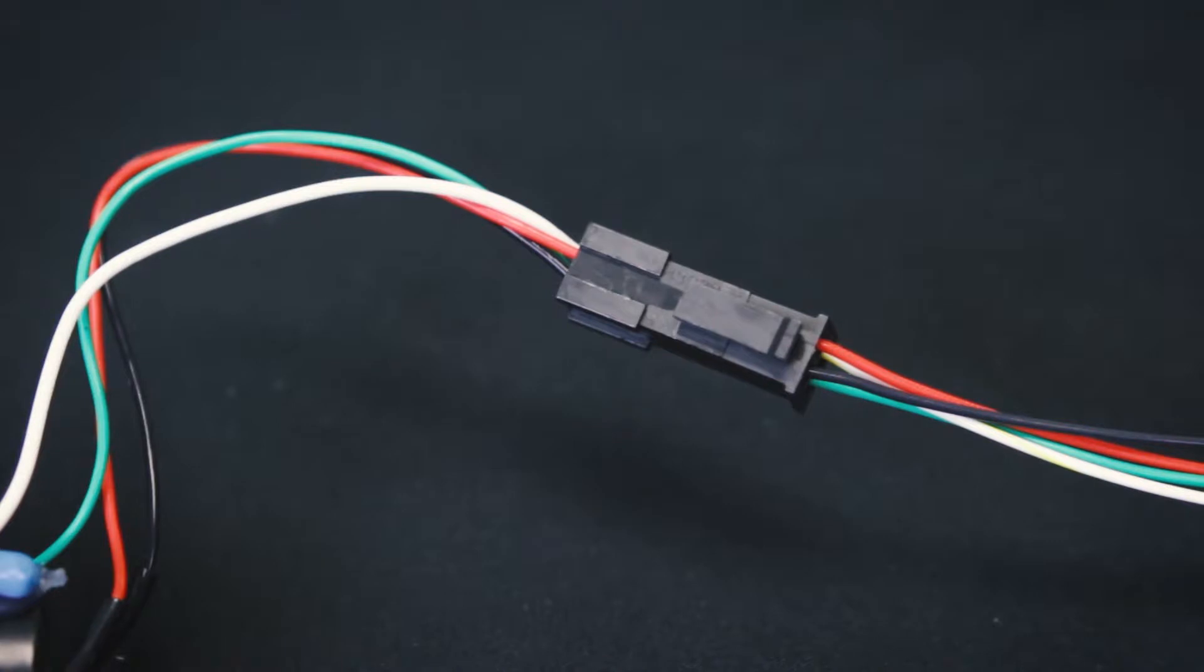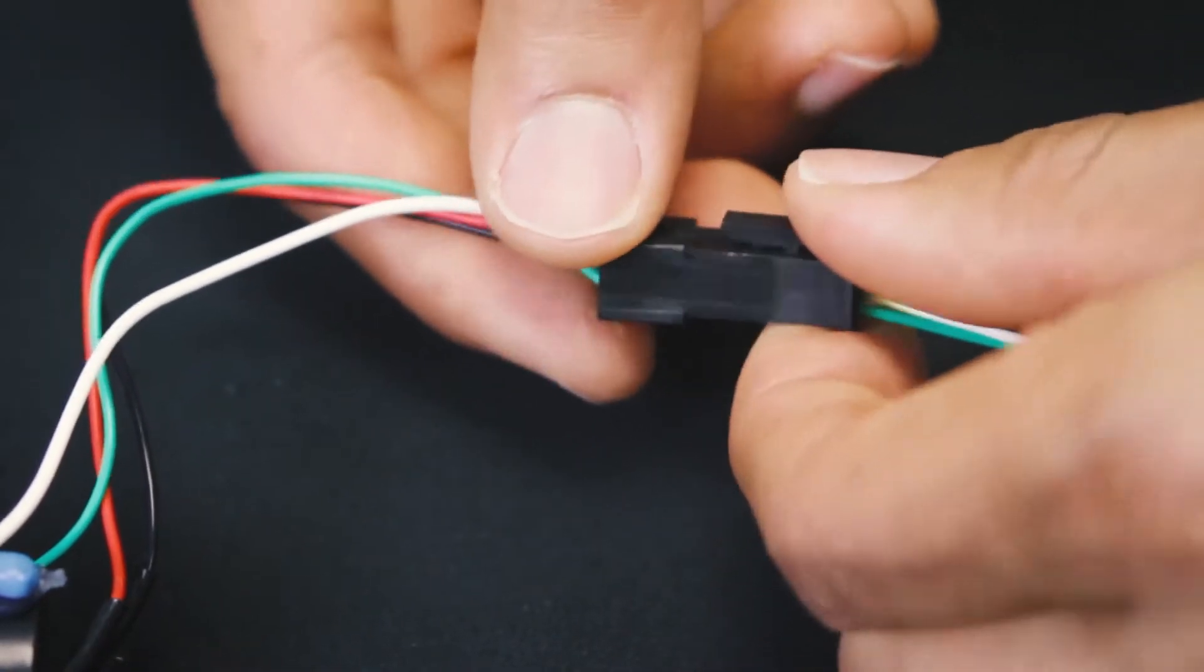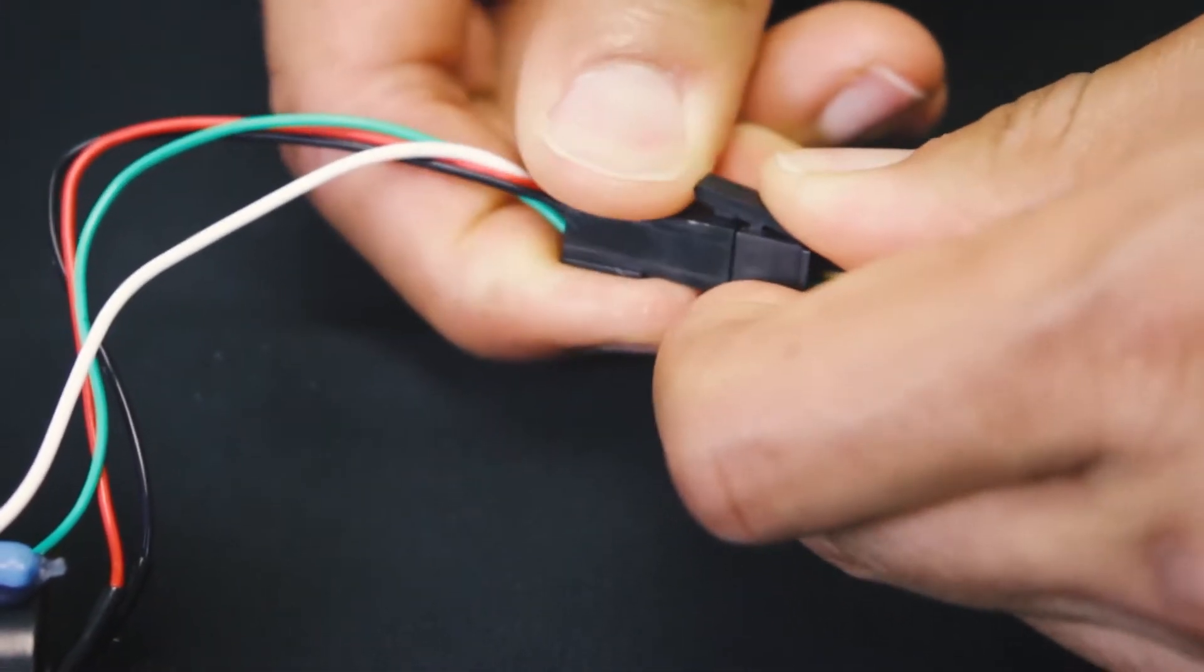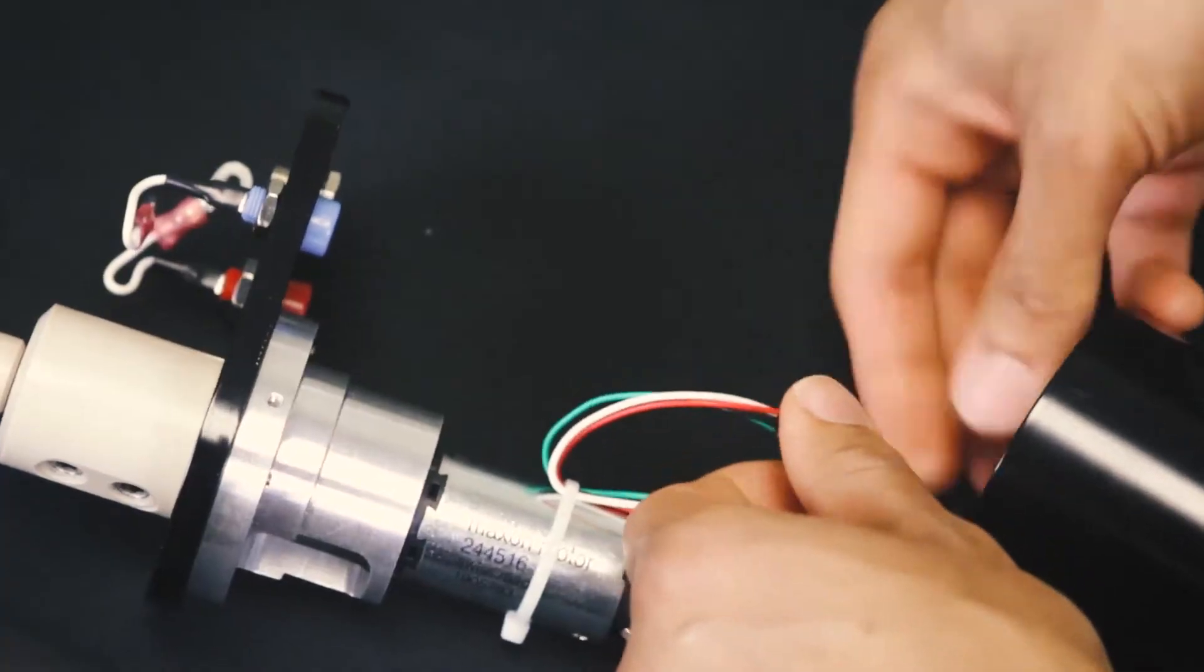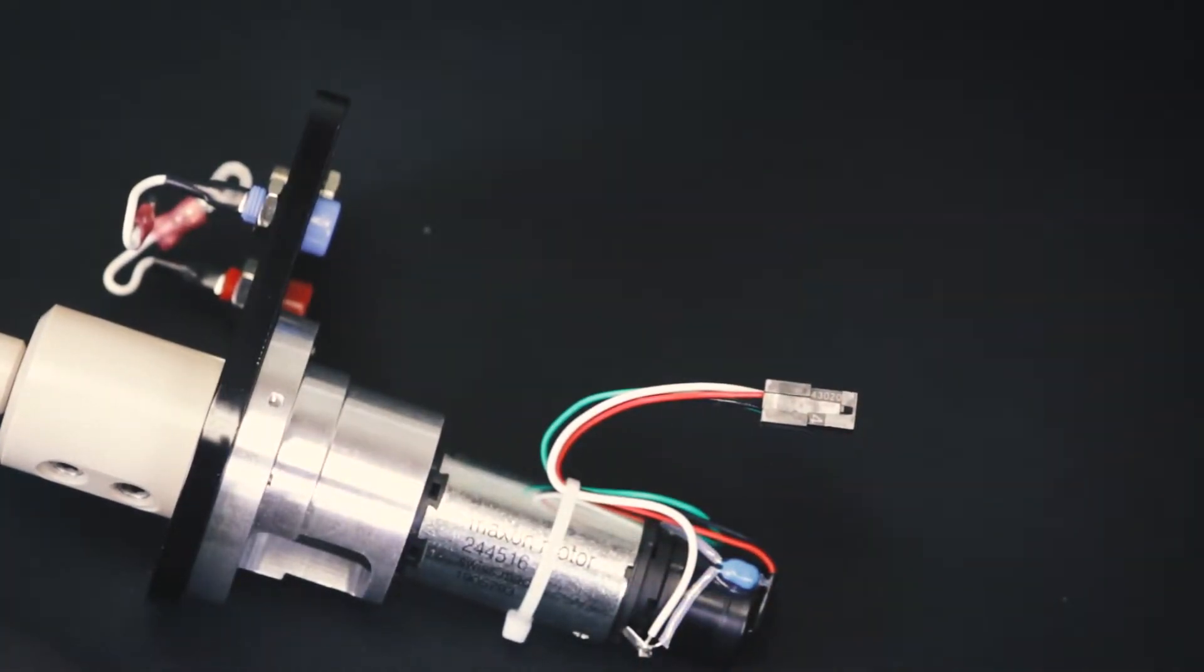Unclip the motor wire assembly by pressing this lever and pull the motor housing from the motor head. Place the motor housing off to the side.